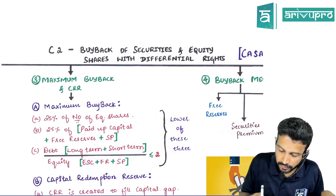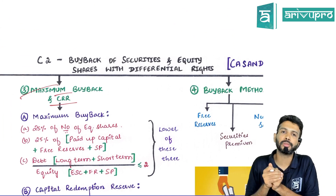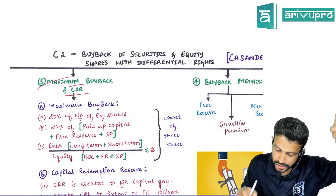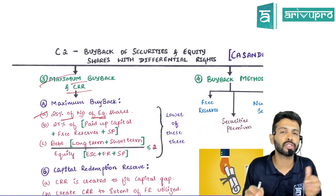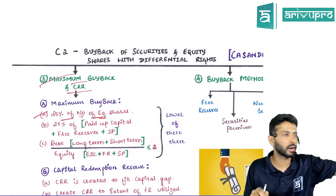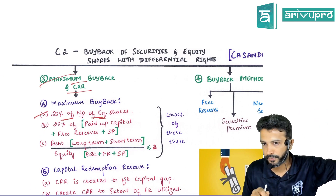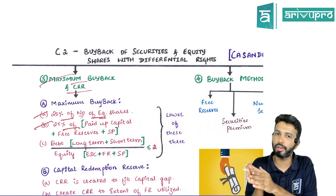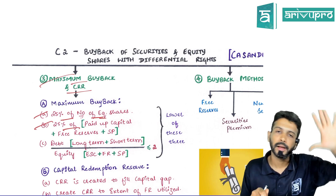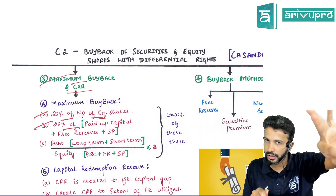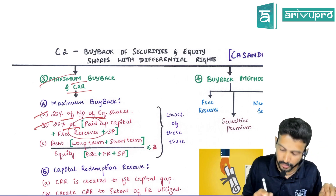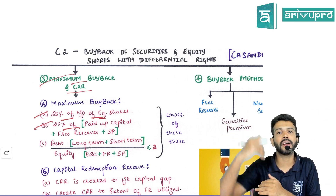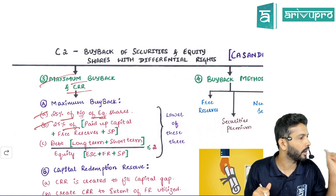There are three criteria for the maximum buyback. First is the share outstanding test: however many shares you have, 25 percent of that can be bought back within a particular year. Second is the resource test: 25 percent of paid-up equity share capital, free reserves, and securities premium — find that value, divide by the buyback price, and you get the maximum number of shares you can buy back as per the resource test.